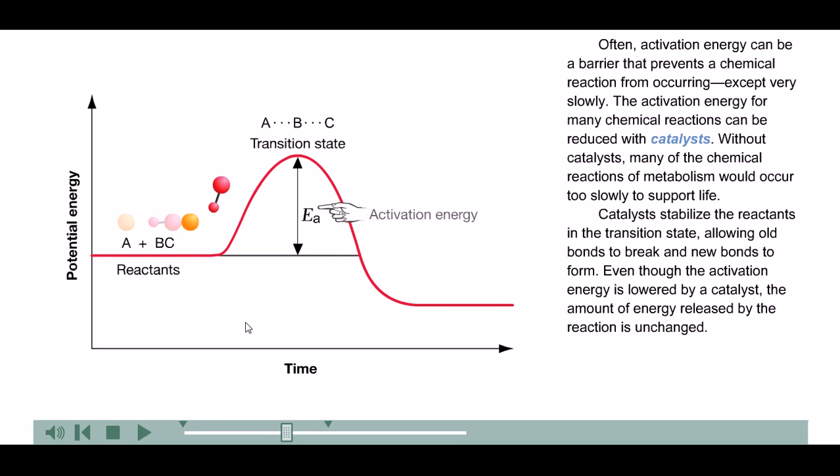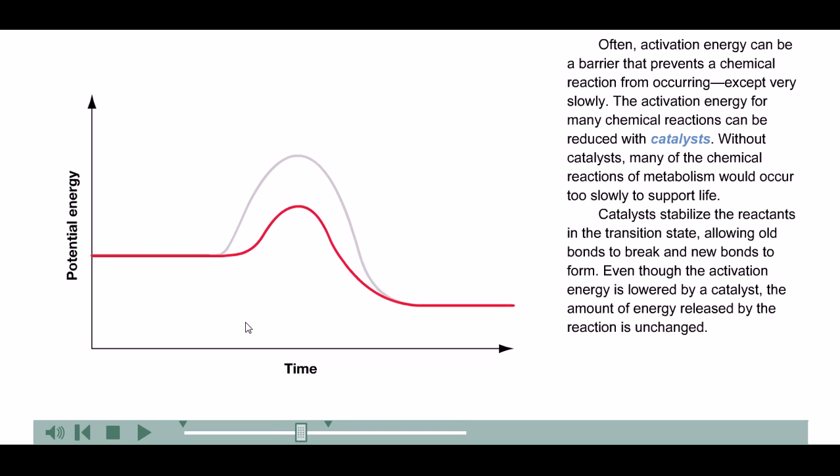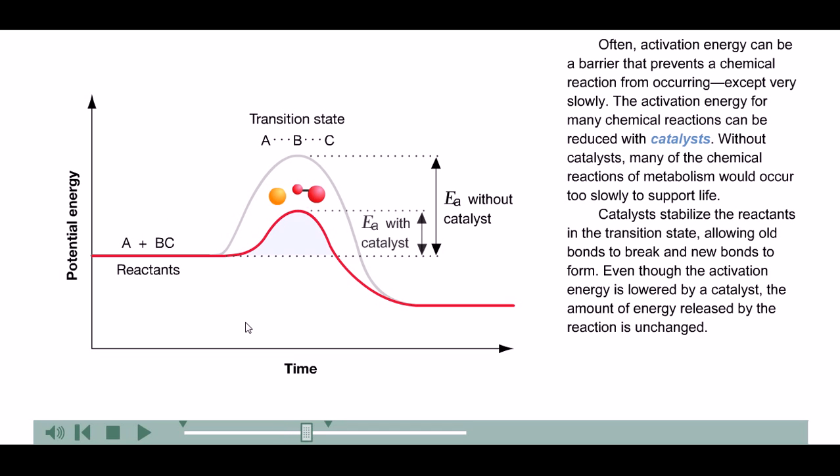Often, activation energy can be a barrier that prevents a chemical reaction from occurring, except very slowly. The activation energy for many chemical reactions can be reduced with catalysts. Without catalysts, many of the chemical reactions of metabolism would occur too slowly to support life. Catalysts stabilize the reactants in the transition state, allowing old bonds to break and new bonds to form. Even though the activation energy is lowered by a catalyst, the amount of energy released by the reaction is unchanged.